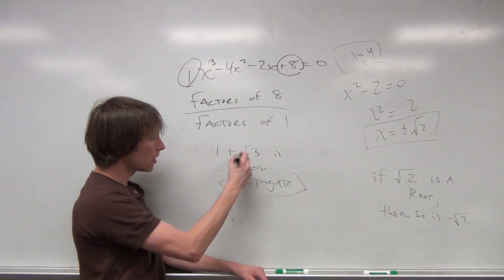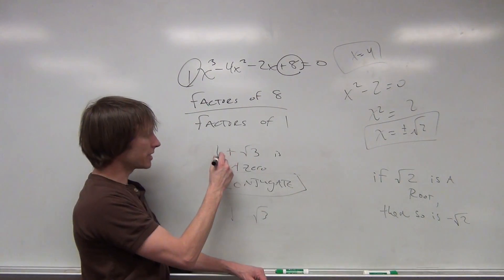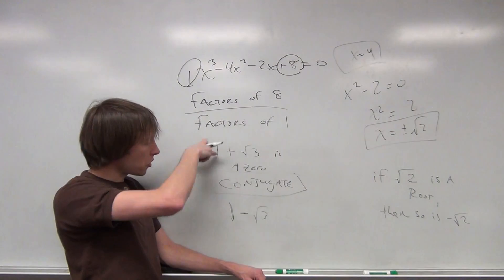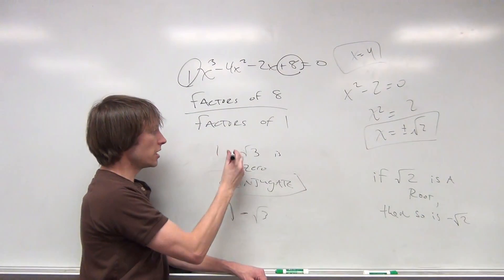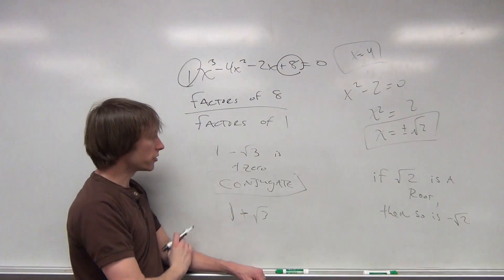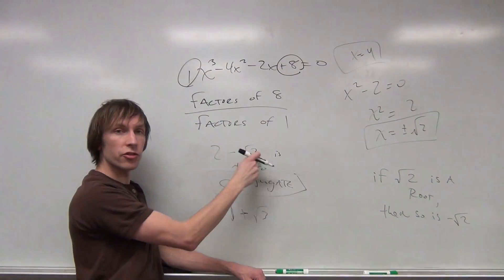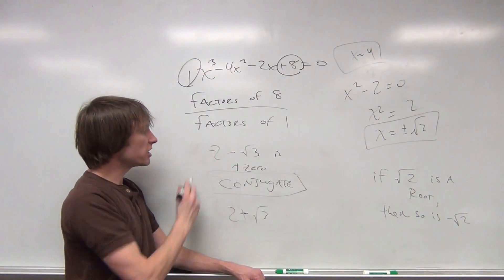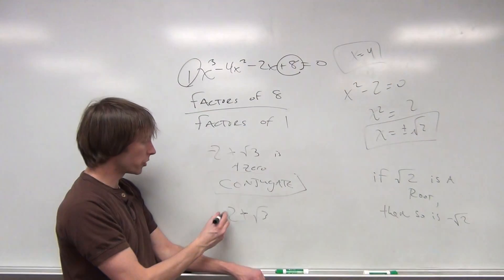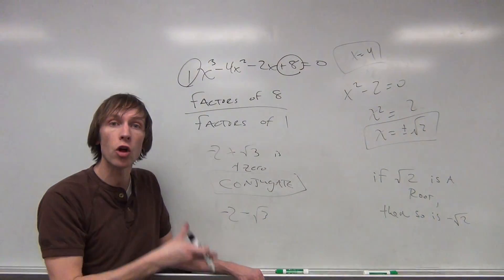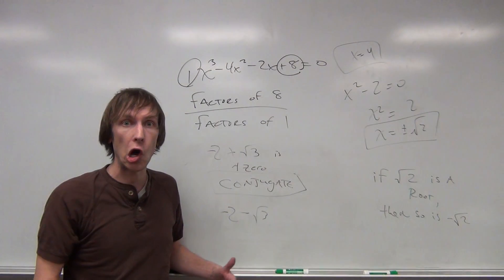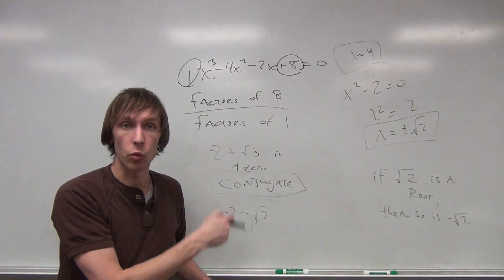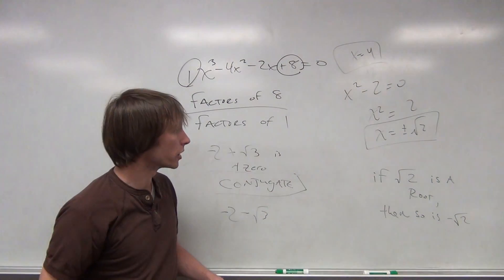If this is a 0, then that is a 0. If this is a 0, then that is a 0. If I say it's 2 minus the square root of 3 is a 0, then 2 plus the square root of 3 is a 0. If I say negative 2 plus the square root of 3 is a 0, then negative 2 minus the square root of 3 is also a 0. It's magic, it's awesome. Check it out, believe it, and then test it and you'll find out that it actually works. It's glorious.